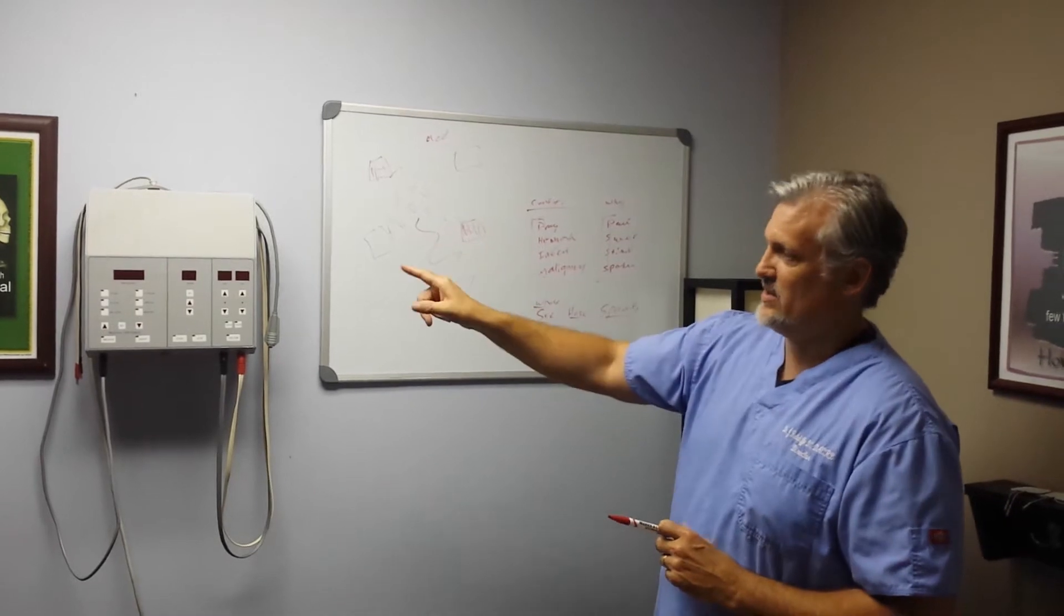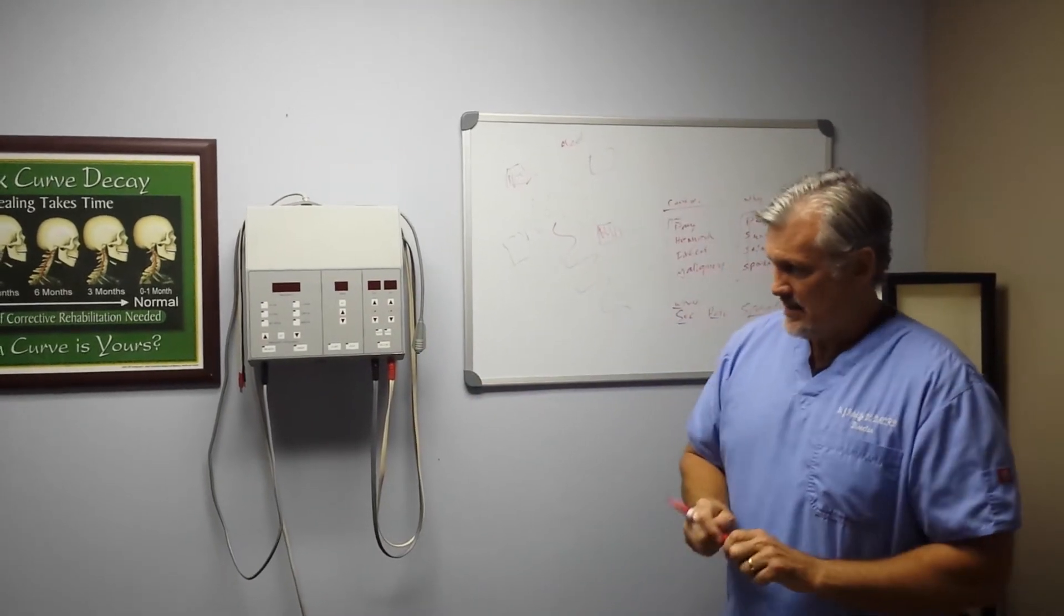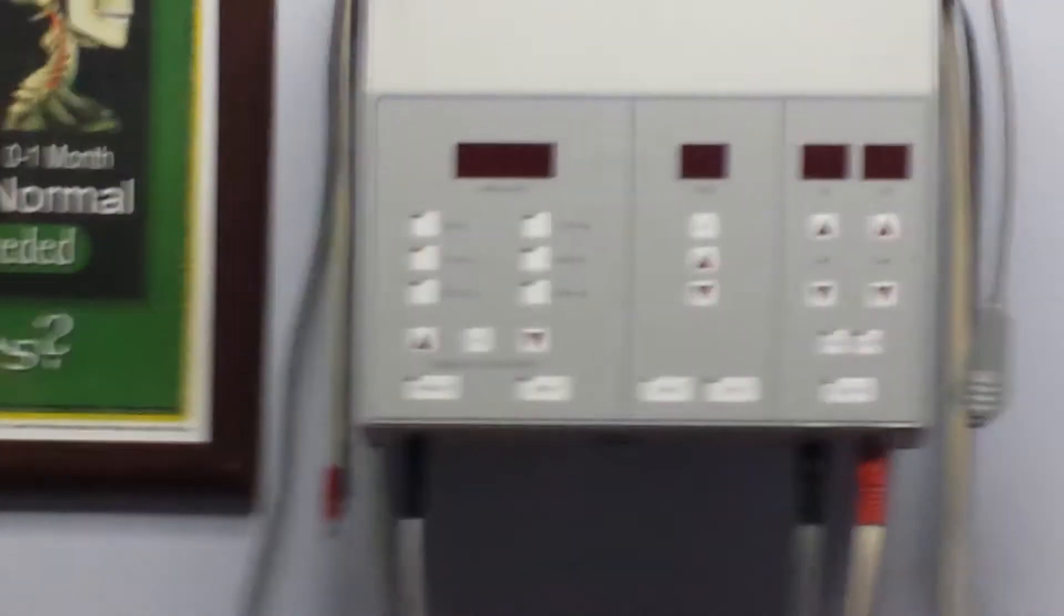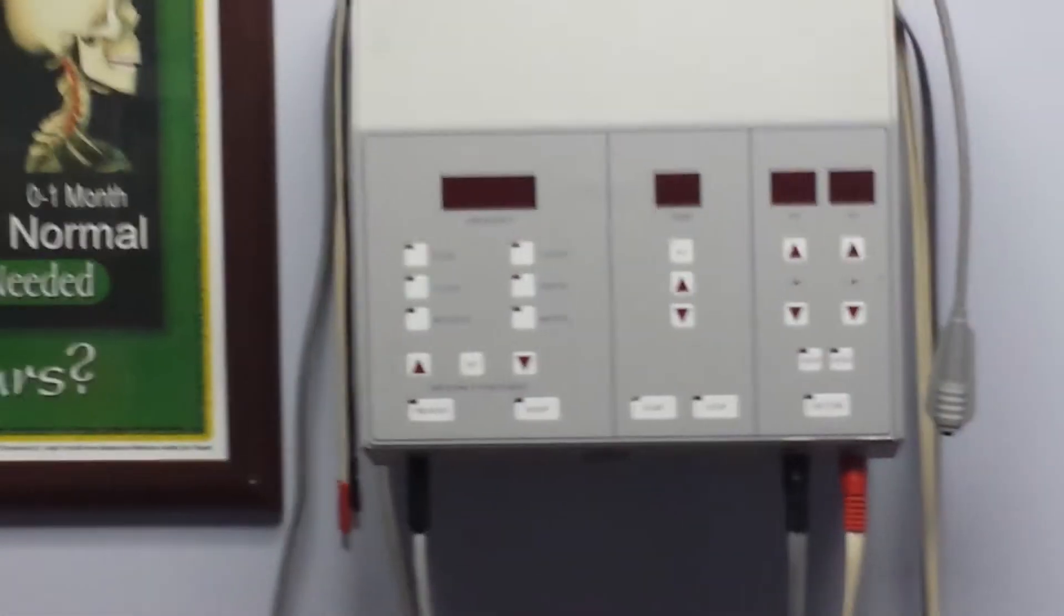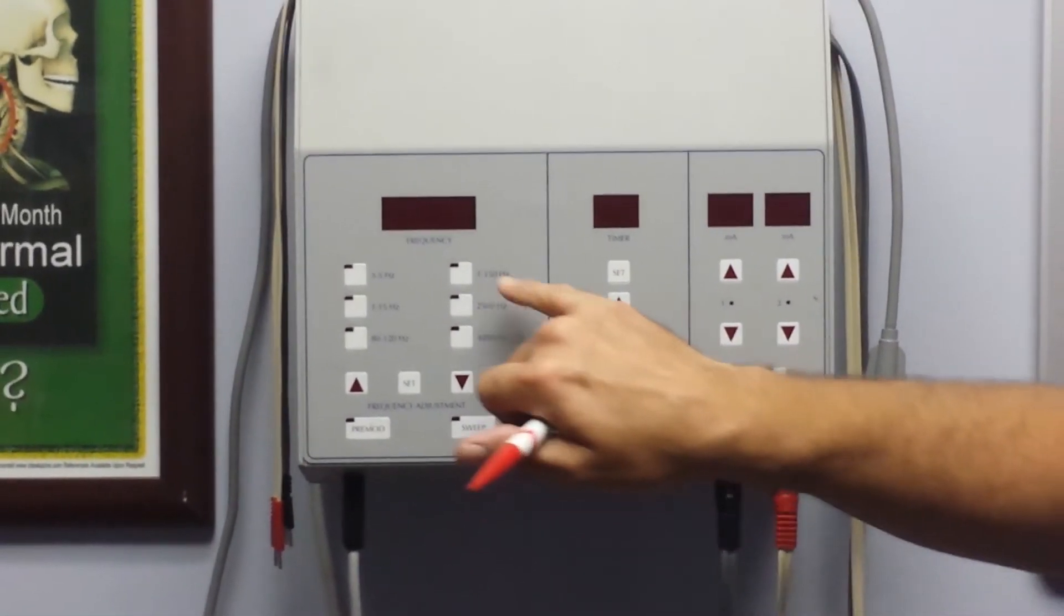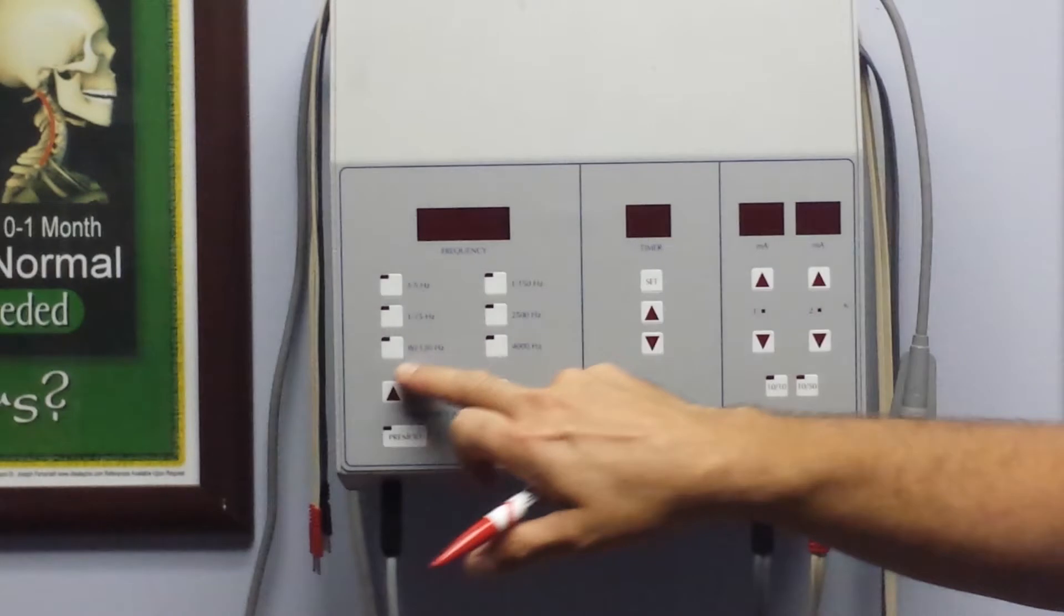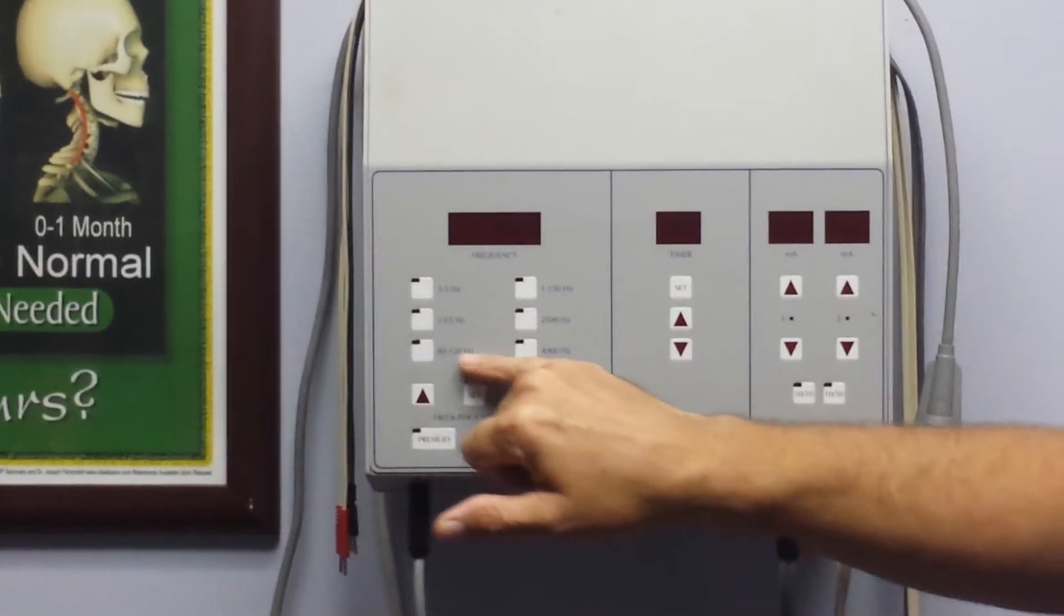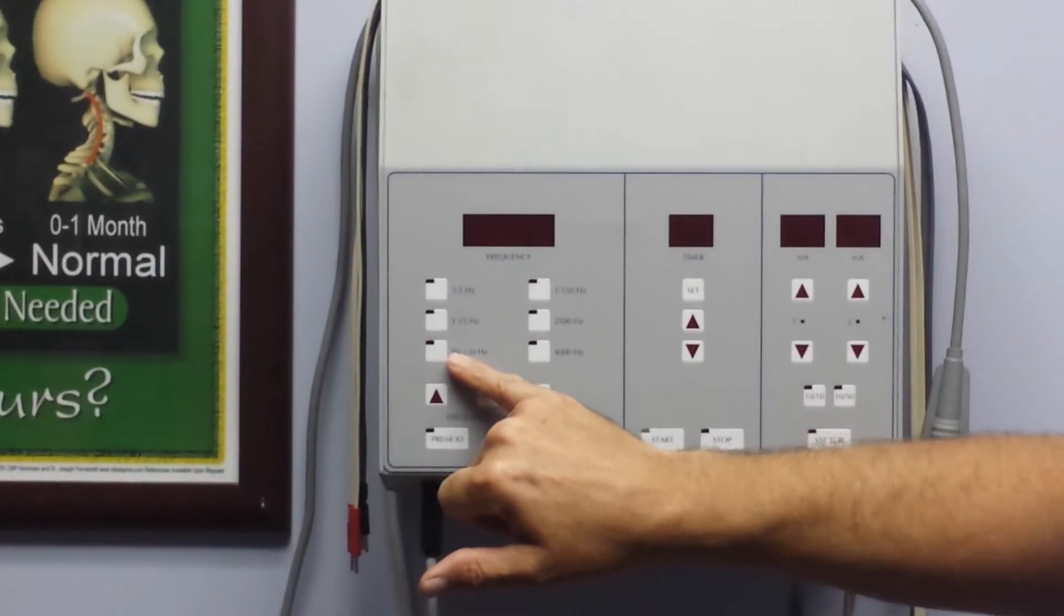Let's get into the actual unit itself. This is an LSI interferential unit. First let's discuss frequencies. We use different frequencies to stimulate different nerves. Nociceptors are the pain fibers. Those are stimulated typically between 90 and 150 hertz. We use 90 to 150 or 80 to 120 if somebody has acute pain. So an acute pain setting works via the gate theory and also enkephalin production. We use 80 to 120. That's the setting we most commonly use in our office.